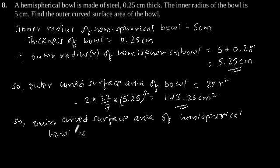So, outer curved surface area of hemispherical bowl is 173.25 cm square.